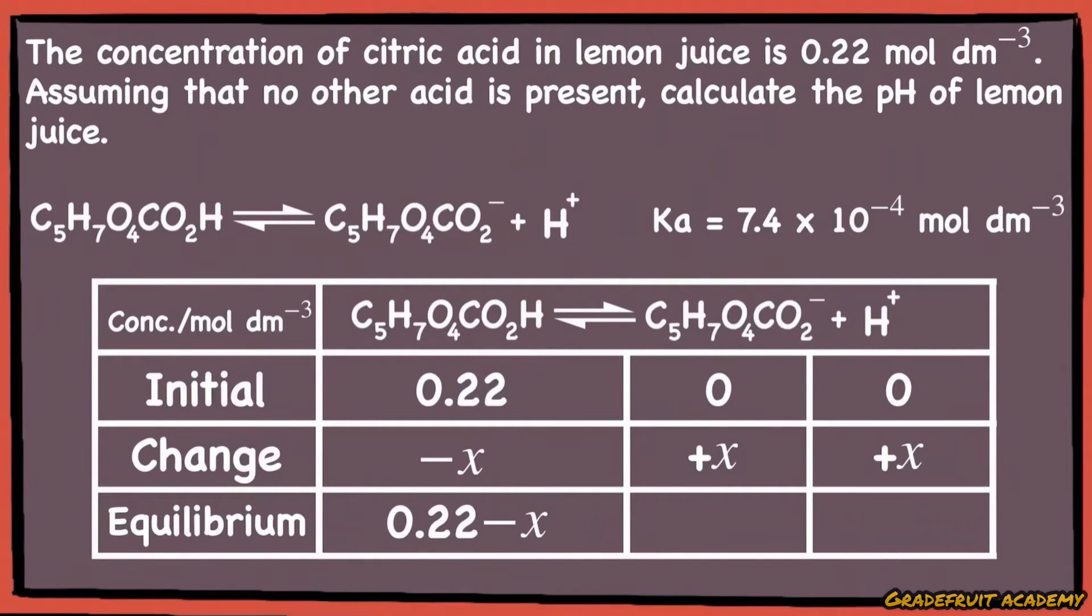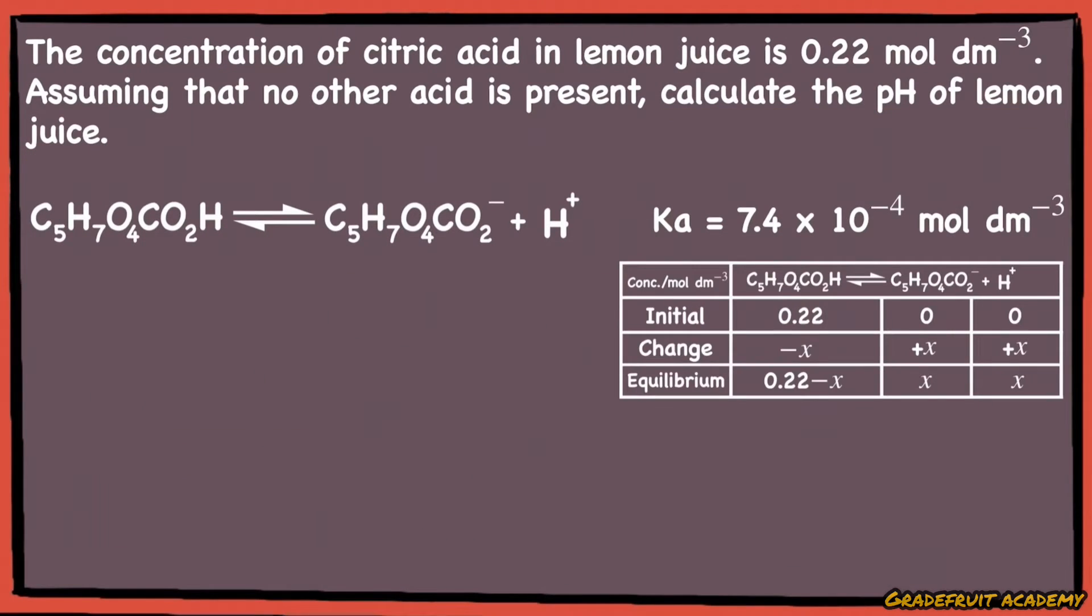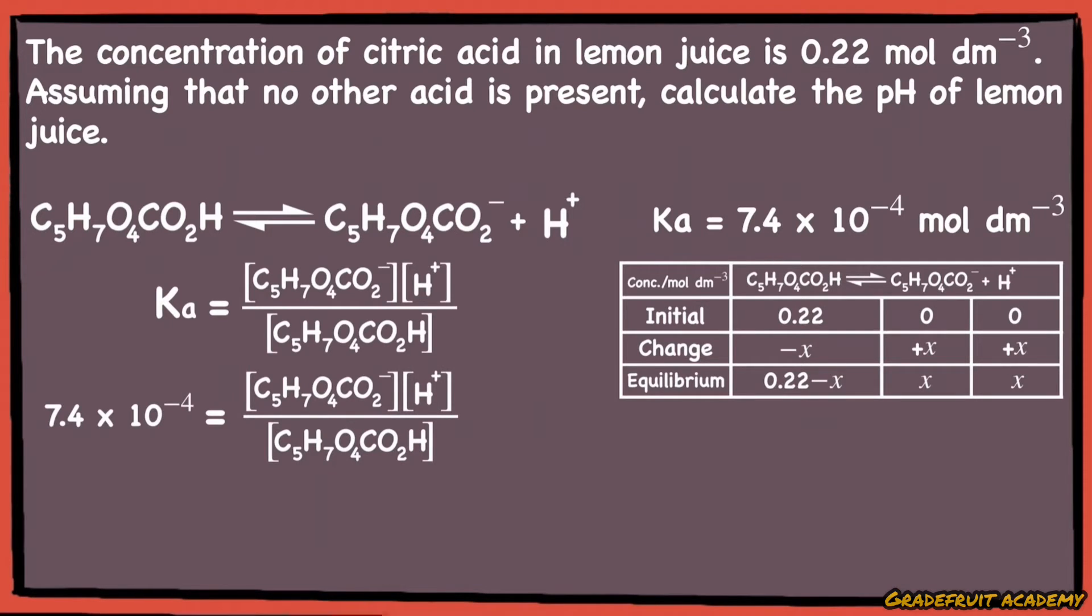Hence at equilibrium, there will be 0.22 minus x mol per dm³ of citric acid molecule left, and x mol per dm³ of the conjugate base and hydrogen ions formed respectively. From here, remember that our end goal is to find the pH of ionized hydrogen ions. To do that, we can write the Ka expression and equate it to 7.4 × 10⁻⁴ as stated in the question. Then we substitute these values at equilibrium from the ICE table into the Ka expression.